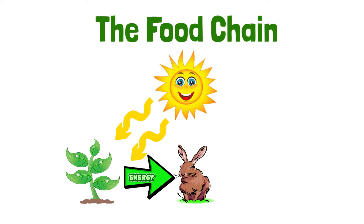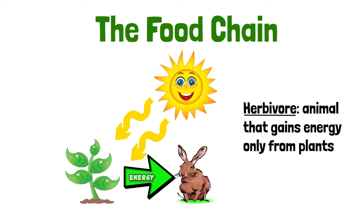Animals that gain energy only from plants are called herbivores. Some examples are rabbits, deer, and caterpillars. Because the plant used some of the sun's energy to grow, the herbivore is not getting all the energy that the plant originally took in from the sun.